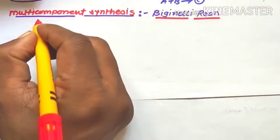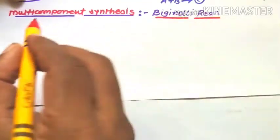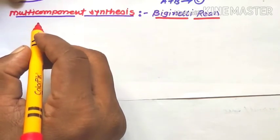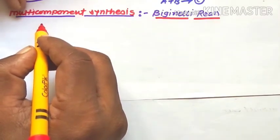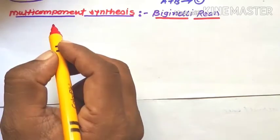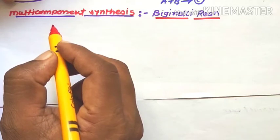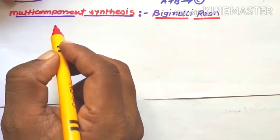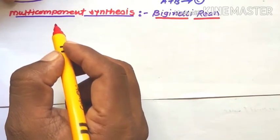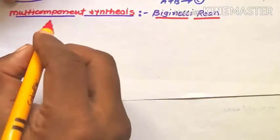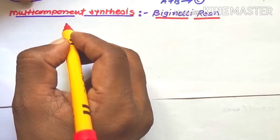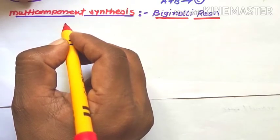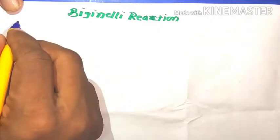The first example of multi-component synthesis is the Biginelli reaction. In this reaction, more than two components are present in a reaction vessel, making it a multi-component synthesis. The reaction takes place in a closed system with decreasing entropy. The Biginelli reaction is a one-pot, acid-catalyzed cyclocondensation of beta-ketoester, urea, and aromatic aldehyde.